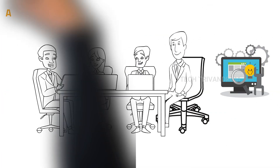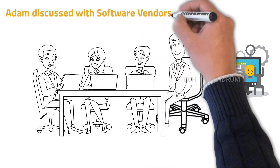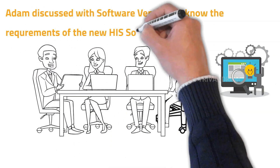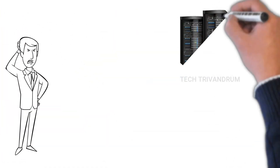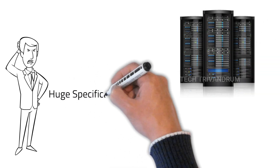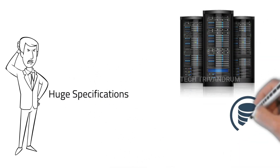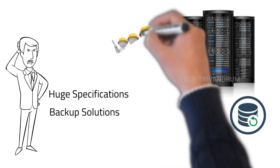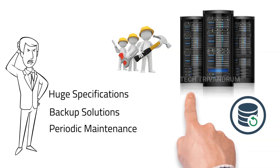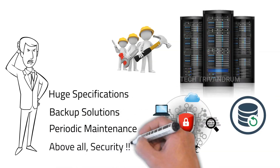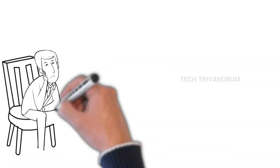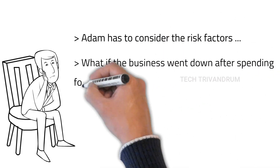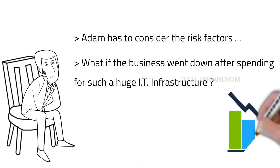Adam discussed with the software vendors to know the hardware and other IT infrastructure requirements to support the new HIS software — the hospital information system that contains modules for supporting all the departments of the new hospital. But after knowing the requirements, Adam became really frustrated and confused because the specifications were very high and also required extra money for periodic backup, periodic maintenance, and above all for security, which includes physical security of the server. Adam became really confused considering the risk factors. What if the business went down after making such a huge investment for IT infrastructure? It will be a big loss of money.